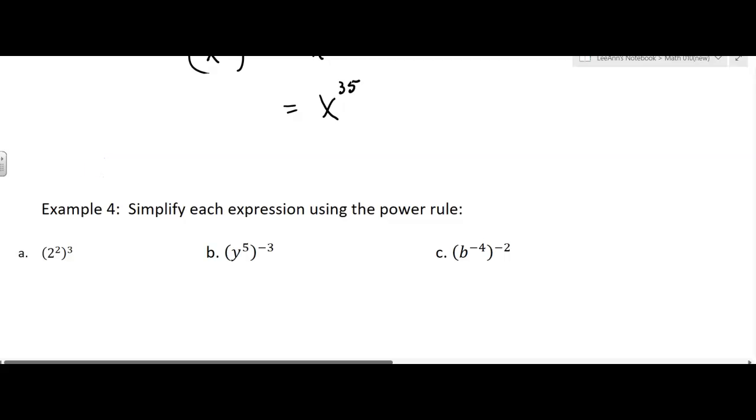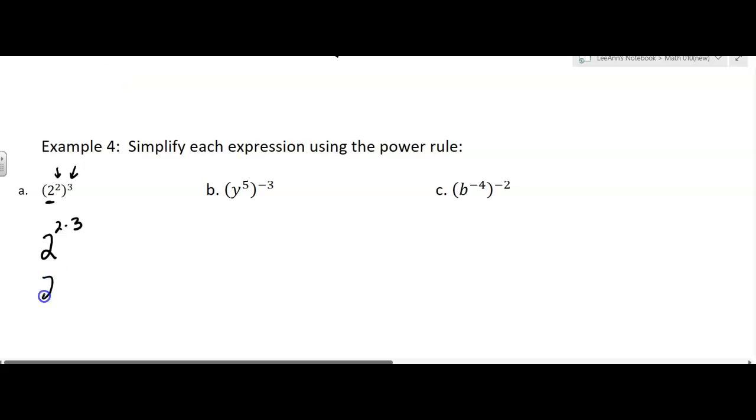So it says simplify each expression using the power rule. I have a base of two, an exponent of two, and an outer exponent of three. So that's going to be two to the whatever two times three is. That's two to the sixth, which is a fairly small number. You could do it on a calculator, or you might just know two to the sixth is 64. Or you might remember two to the fifth was 32, so you've got one more factor of two.